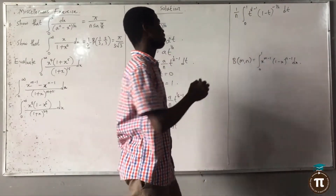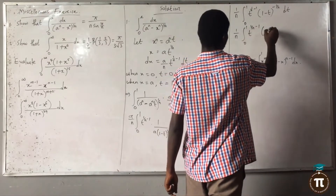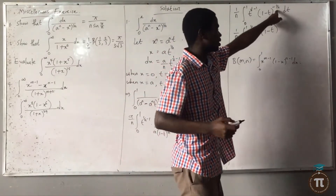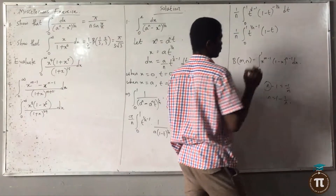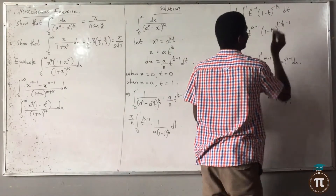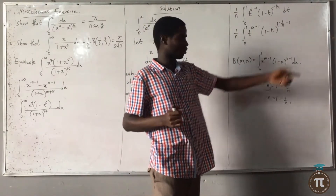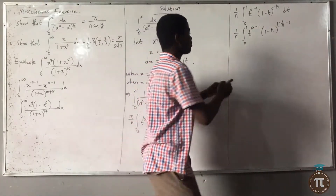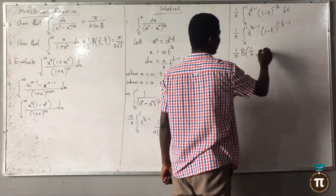You can see that this is 1/n times the integral from 0 to 1 of t^(1/n - 1) times (1 minus t)^(-1/n) dt. Here m equals 1/n, and for the second term, n minus 1 equals -1/n, so n equals 1 minus 1/n. This gives us 1/n · Beta(1/n, 1 minus 1/n).